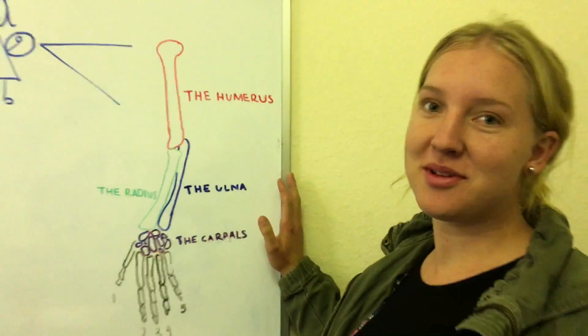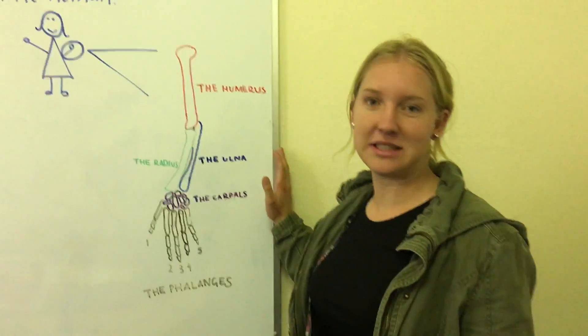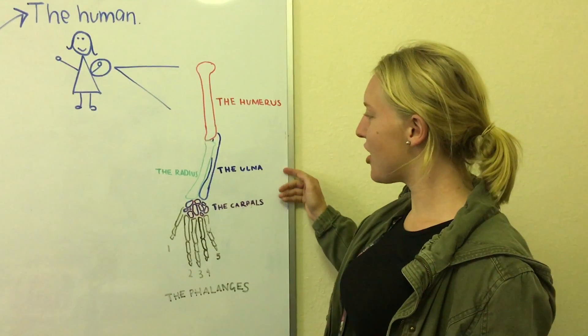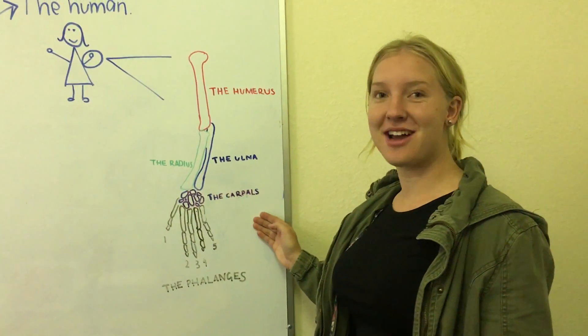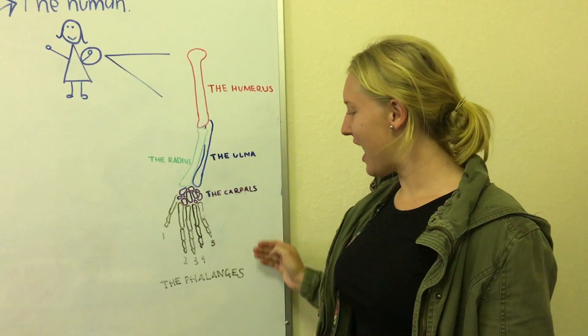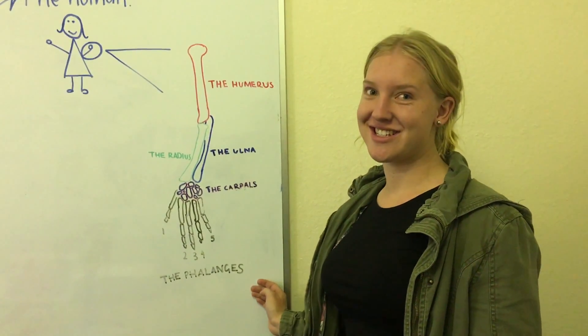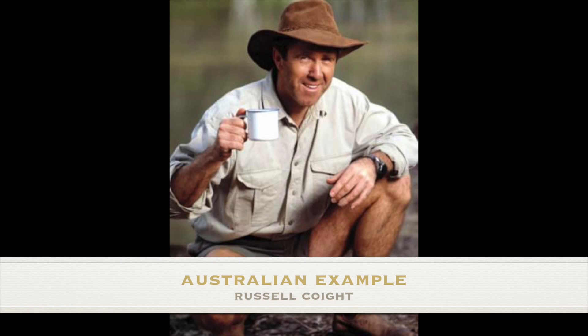The human's pentadactyl limb consists of the humerus, the ulna, the radius, the carpals, and the phalanges. An Australian example of the pentadactyl limb is Russell Cooke. As you can see here, he's using his pentadactyl limb and his opposable thumb to grip his mug.